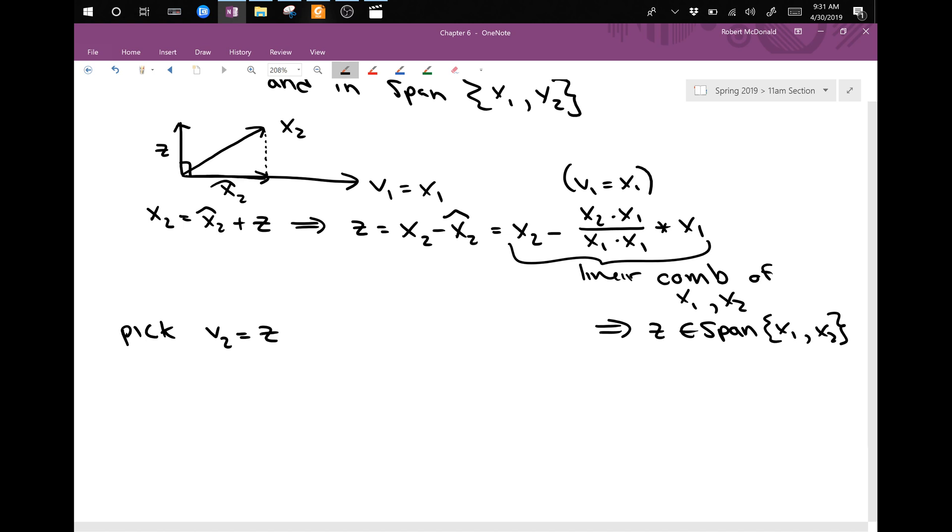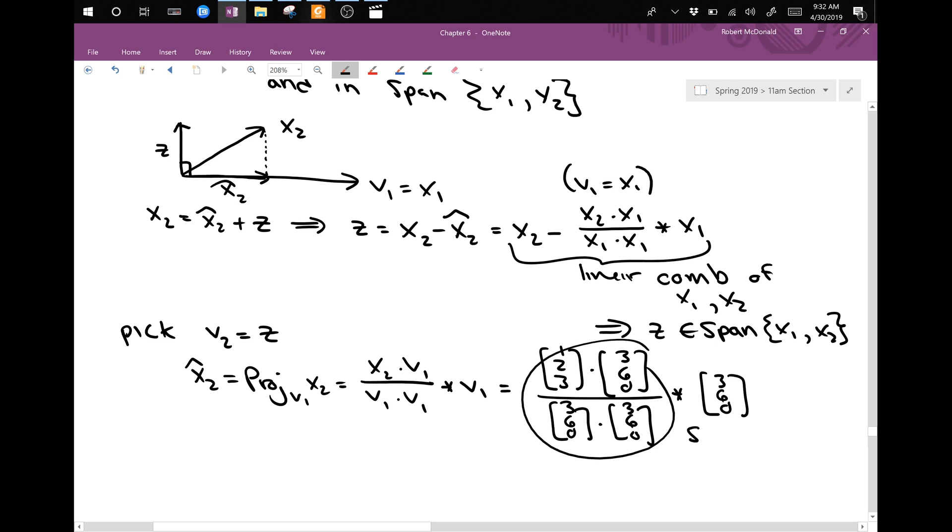But now let's actually try to do this. So we'll look at x2 hat, that's the projection of x2 down to v1. And so that'll be (x2 dot v1)/(v1 dot v1) times v1. And so in this case, x2 is just the vector [1, 2, 2] dotted with the vector [3, 6, 0] divided by [3, 6, 0] dotted with itself. And this is times the vector [3, 6, 0]. So this is just a scalar and this is v1, which is equal to x1.